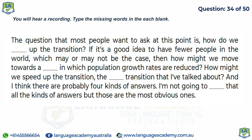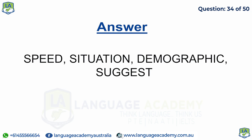The question most people want to ask is: how do we speed up the transition? If it's a good idea to have fewer people in the world — which may or may not be the case — how might we move towards a situation where population growth rates are reduced? How might we speed up the demographic transition I've talked about? I think there are probably four kinds of answers — not the only answers, but the most obvious ones.